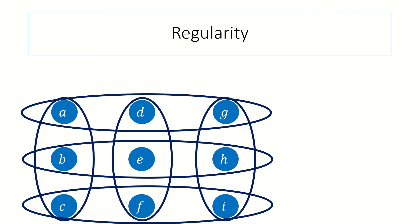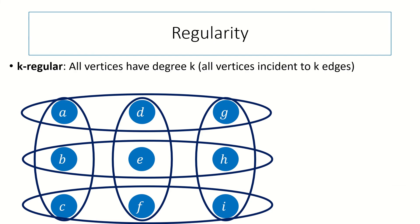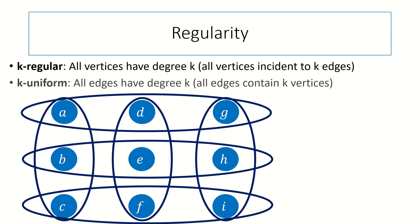Moving on, just like in graph theory where a regular graph is one whose vertices all have the same degree, a K-regular hypergraph is a hypergraph whose vertices all have degree K — meaning they're all incident to K edges. Also, K-uniform hypergraphs are hypergraphs whose edges all have degree K, meaning they each contain K vertices. The hypergraph shown here is 2-regular and 3-uniform: every edge is incident to exactly three vertices, and every vertex is incident to exactly two edges.